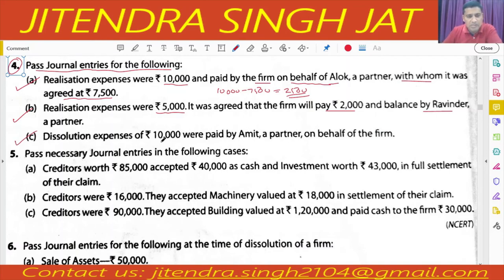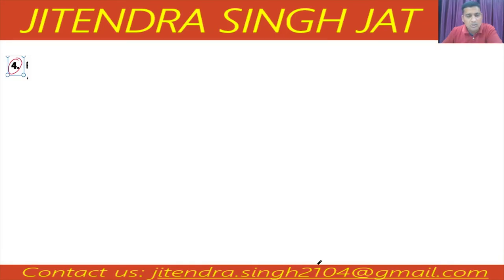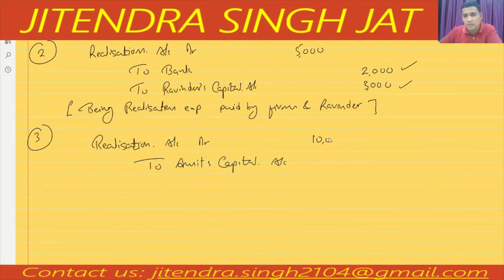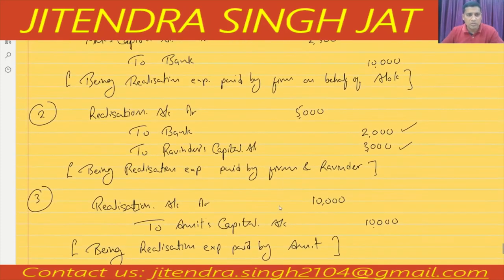Point C: dissolution expenses of ₹10,000 were paid by Amit on behalf of the firm. Now Amit is a partner who paid on behalf of the firm, so Amit must get reimbursed. The entry will be: Realization Account debited ₹10,000, and credit to Amit's Capital Account ₹10,000 — being realization expenses paid by Amit on behalf of the firm. I hope these entries are clear to everyone.